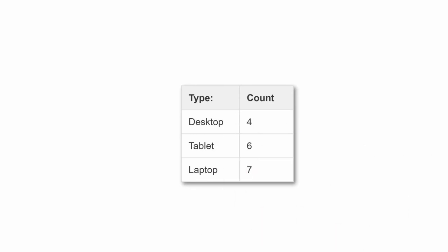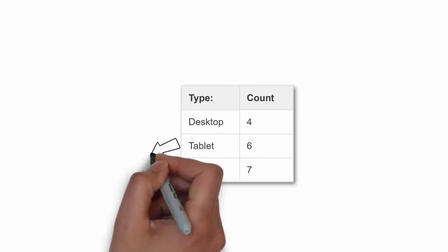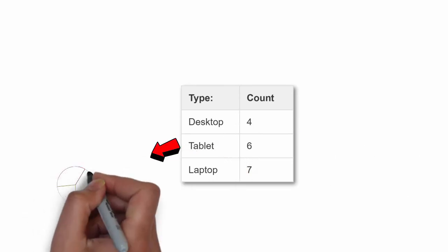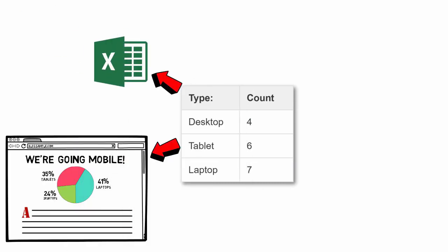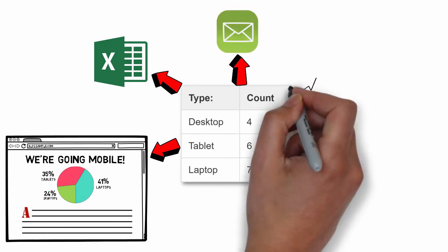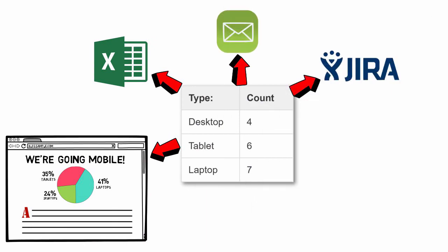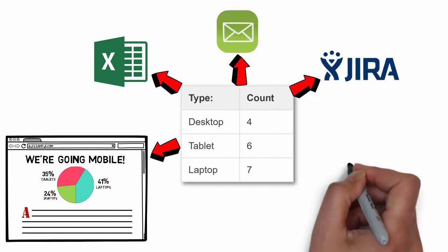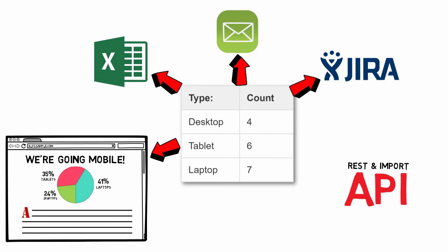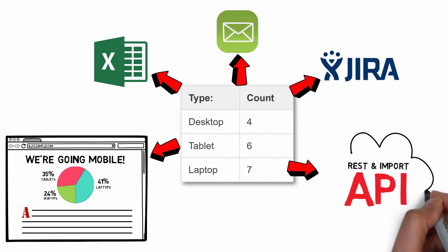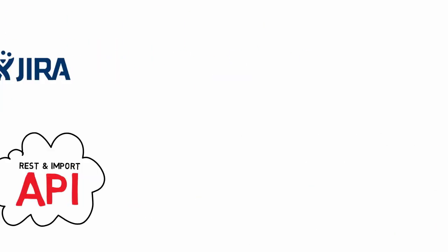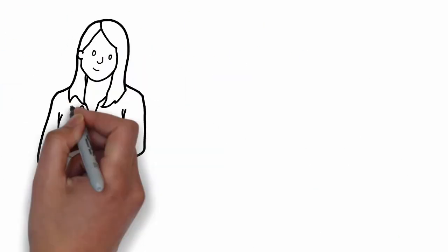Or share it with your team — turn your table into a colorful chart and post it on your blog, download your data as an Excel spreadsheet, send it out as an email, turn it into an issue on Jira, or use REST and import APIs to share your data with other popular software.